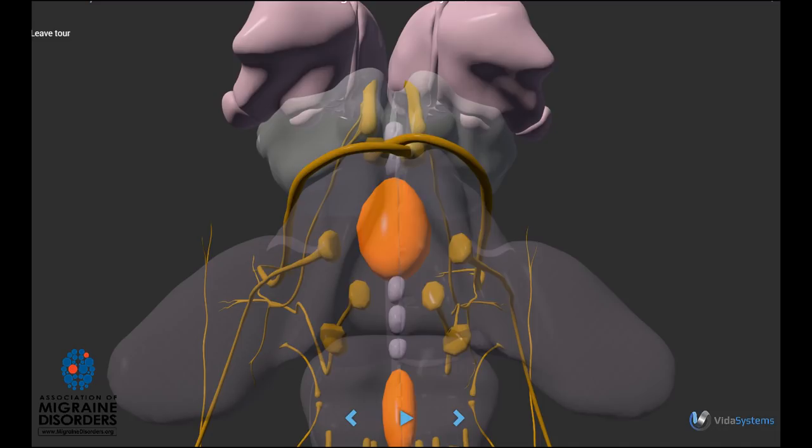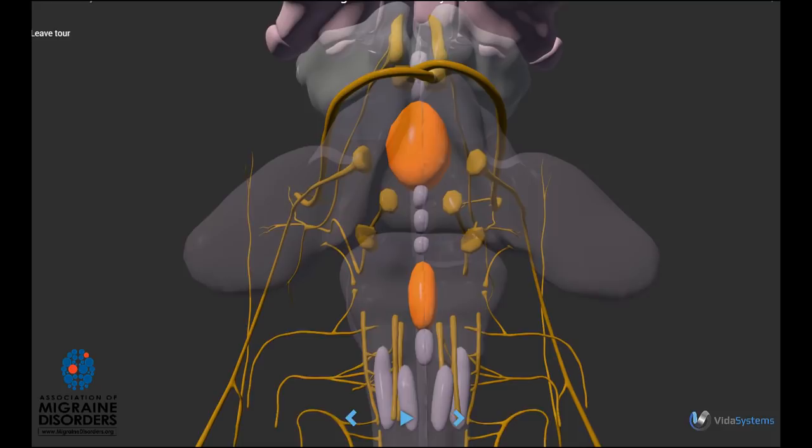The locus coeruleus is a nucleus located in the pons, and it controls stress, balance, mood, sleep, and autonomic system.